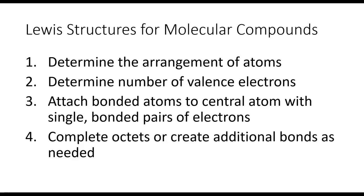First, we're going to look at the arrangement of the atoms. Then we need to find the number of valence electrons. We're going to attach all of the atoms to the central atom. And then we're going to complete octets and create additional bonds as needed. I'll go through each of these steps as we go through here.